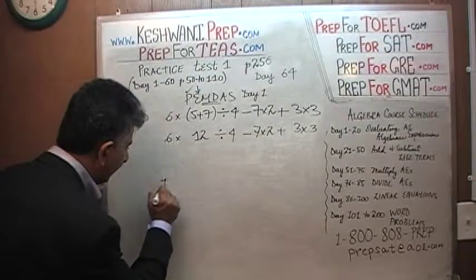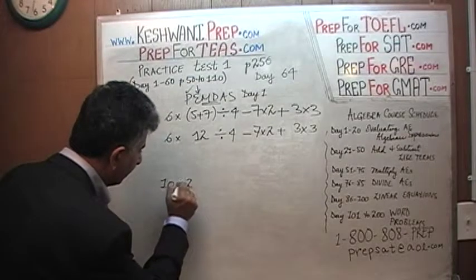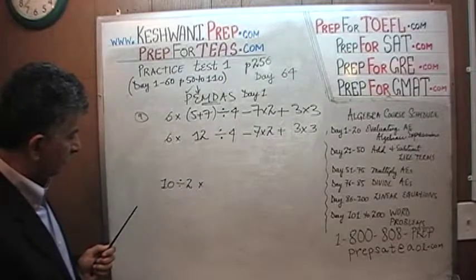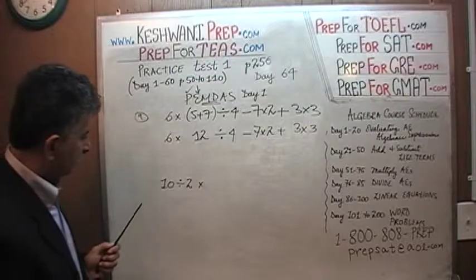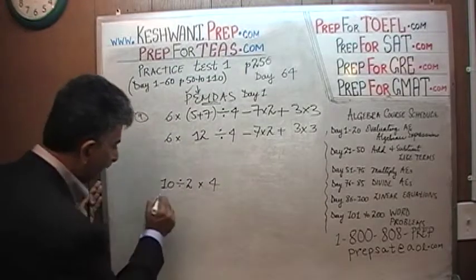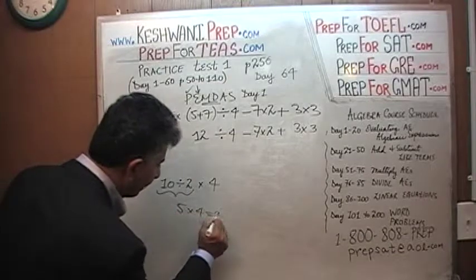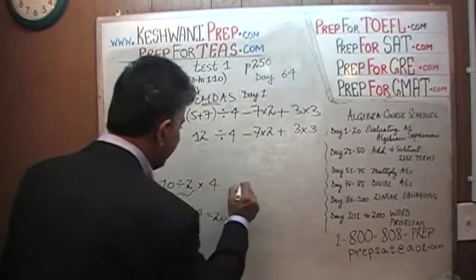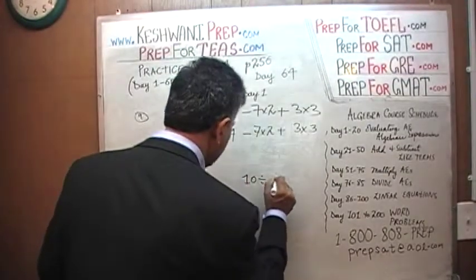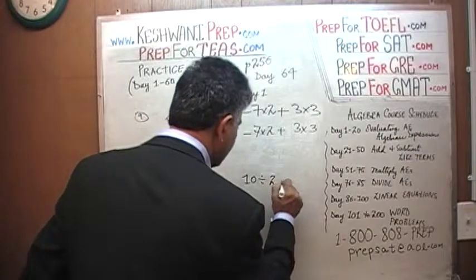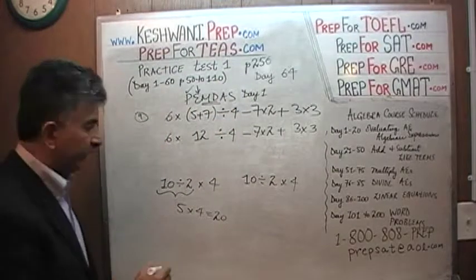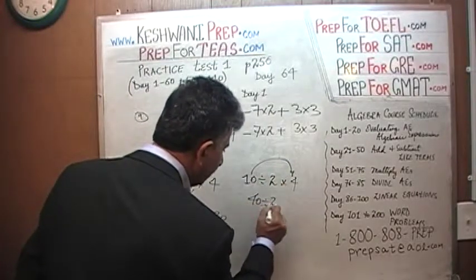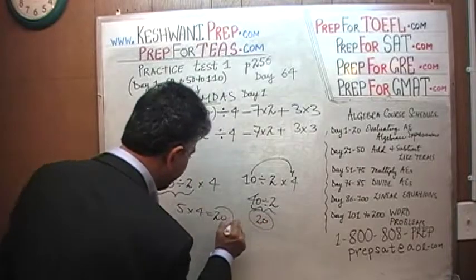For example: 10 divided by 2 is 5, and 5 times 4 is 20. Now on the other hand, instead of doing it in that order, if we have 10 divided by 2 times 4 and we first do 10 times 4 — that's 40 — then 40 divided by 2, we again get the answer of 20. We get the same answer because multiplication and division have the same priority.